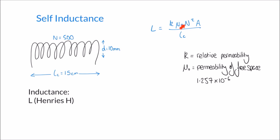Thirdly, we have N squared, where N is the number of turns of the coil — in this case my coil has 500 turns. Finally, A is the cross-sectional area of the coil.